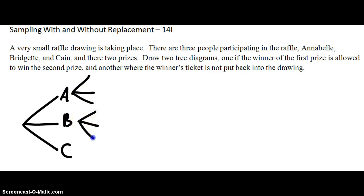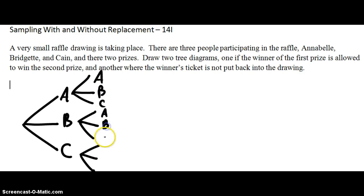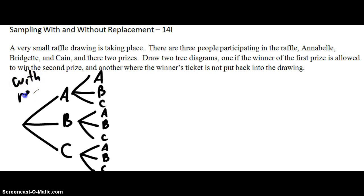Then again we have three options: Annabelle, Bridget, Kane; Annabelle, Bridget, Kane; Annabelle, Bridget, Kane. So in this case, it could be Annabelle and Annabelle, which is kind of mean, but that's the way it works. This is with replacement.